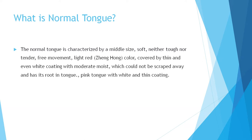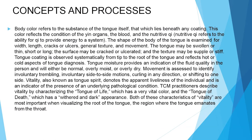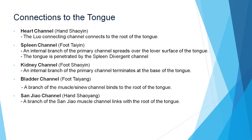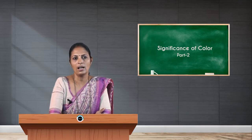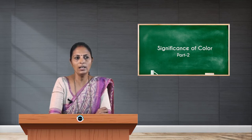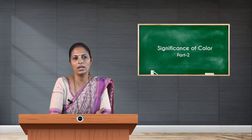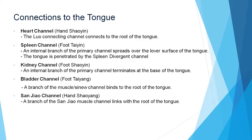The normal tongue is characterized by a middle size, soft, neither tough nor tender, with free movement, light red in color, covered by a thin and even white coating with moderate moisture, which could not be scraped away, and it has its root in the tongue. A pink tongue with white and thin coating may also be considered a normal tongue.